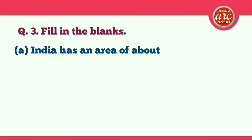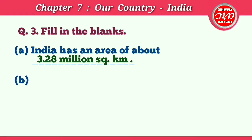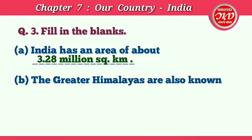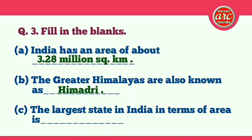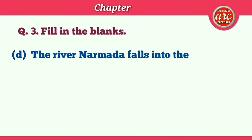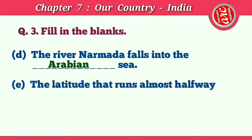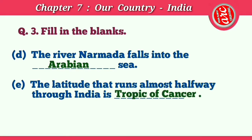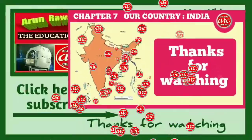Question number three: Fill in the blanks. (a) India has an area of about 3.28 million square kilometers. (b) The greater Himalayas are also known as Himadri. (c) The largest state in India in terms of area is Rajasthan. (d) The river Narmada falls into the Arabian Sea. (e) The latitude that runs almost halfway through India is the Tropic of Cancer. These were the question answers of the chapter. Thanks for watching the video till the end.